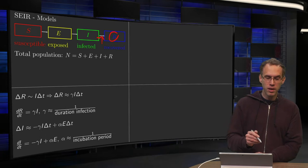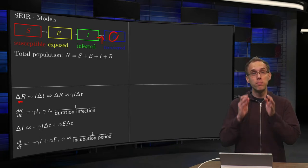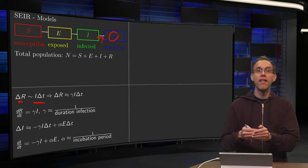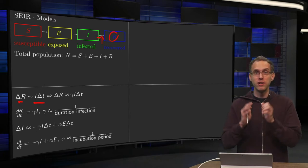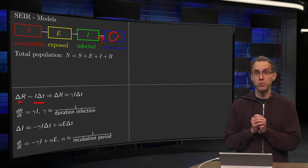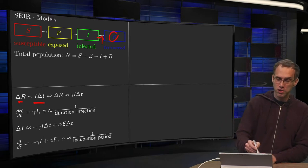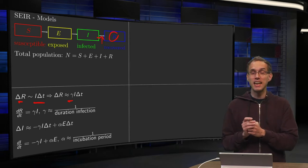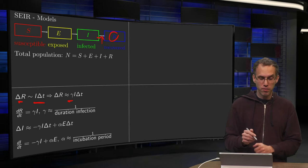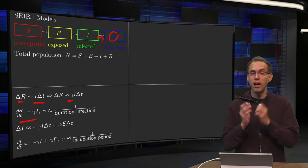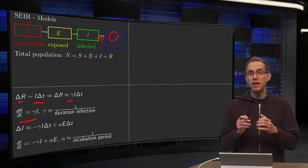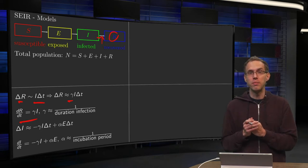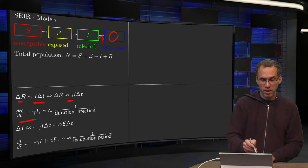So the number of people recovering is assumed to be proportional to the number of people that's infected and to the time. So if there are more people infected, more people will recover, and if you wait longer, more people will recover. So that's the basic idea. So delta R is proportional to I times delta t, and let's give this proportionality constant a name. Let's call it gamma. So then we have delta R is approximately equal to gamma times I times delta t. It's only exactly equal if you take your delta t small enough. So then we have dR/dt equals gamma times I, where we have some unknown parameter gamma. However, we can estimate the gamma quite decently because gamma basically tells you how many people recover per infection per unit time.